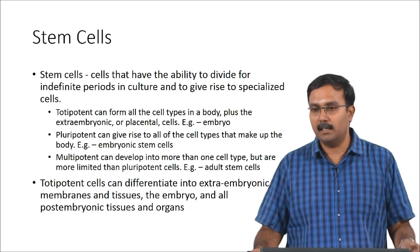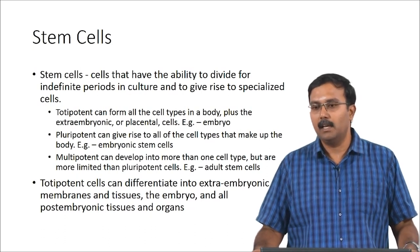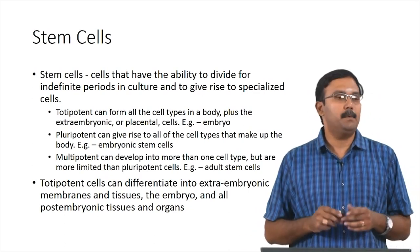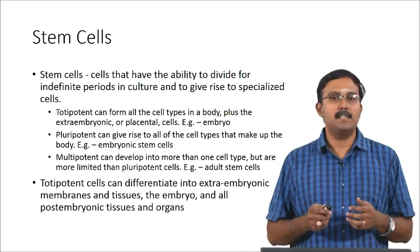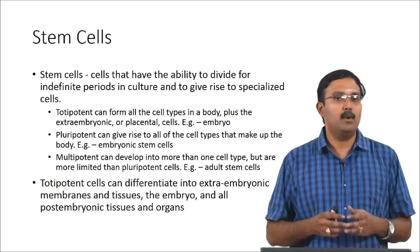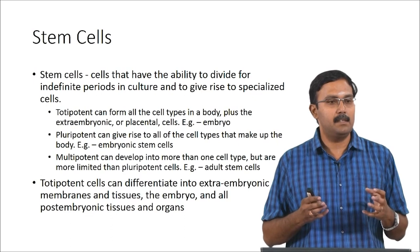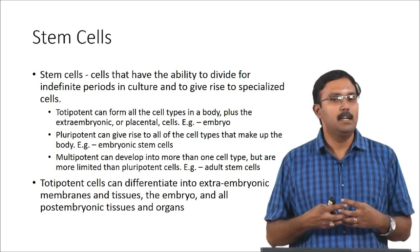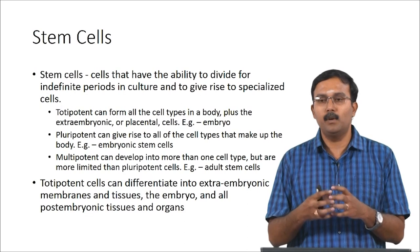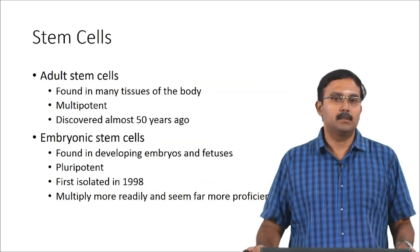The cord blood cells are multipotent stem cells; only embryonic stem cells are pluripotent. Totipotent cells can differentiate into extra-embryonic membranes and tissues, the embryo, and all post-embryonic tissues and organs — meaning they basically have the potential to develop into a whole organism. The embryo itself is essentially a totipotent cell.